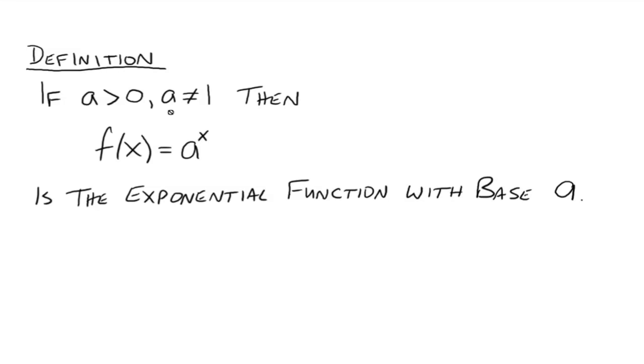Back here at our definition, we can't let a be 1 because 1 to the x power, well it's just 1. So no matter what you plugged in for x, your y value would always be 1. So you have a horizontal line. And that's not an exponential function. So that's why we throw that one out.